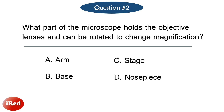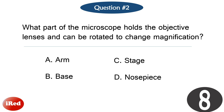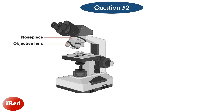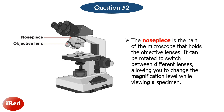Question number 2: What part of the microscope holds the objective lenses and can be rotated to change magnification? The correct answer is letter D, nosepiece. The nosepiece is the part of the microscope that holds the objective lenses. It can be rotated to switch between different lenses, allowing you to change the magnification level while viewing a specimen.